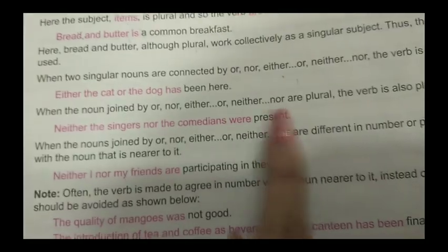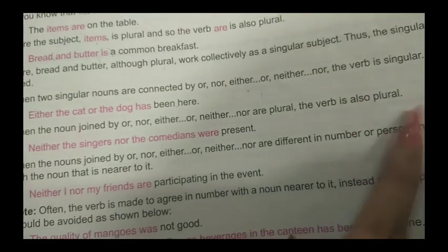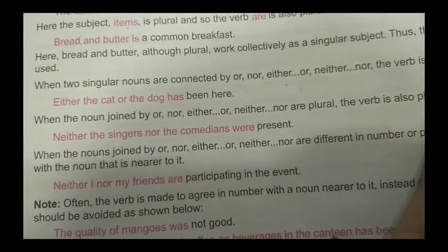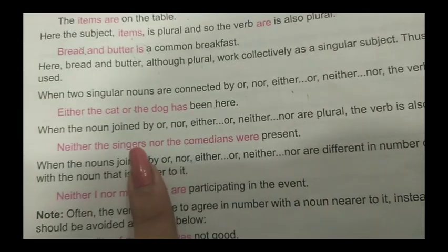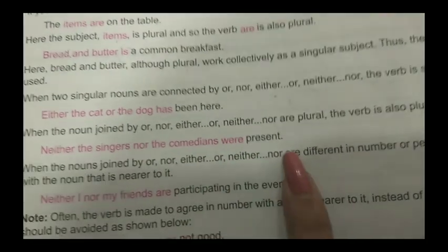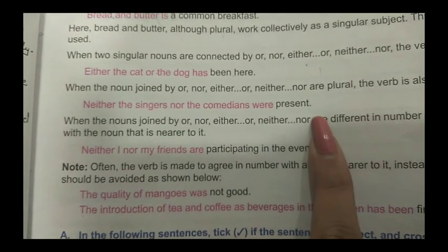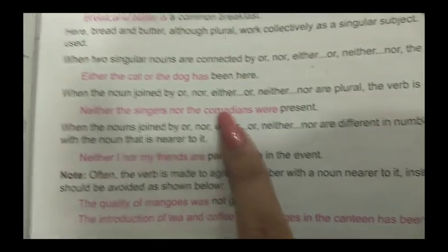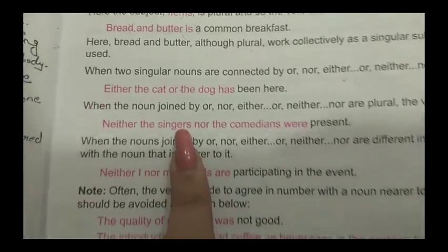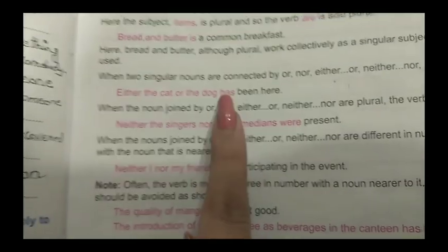When the nouns joined by or, nor, either...or, or neither...nor are plural, the verb is also plural. For example: 'Neither the singers nor the comedians were present.' We count this in plural because here we have comedians and singers — it's not cat or dog, it's cats and dogs.